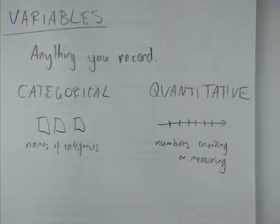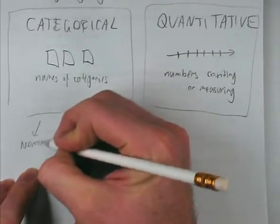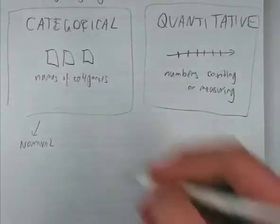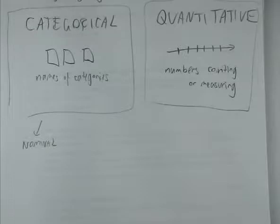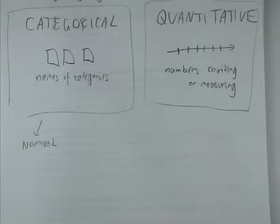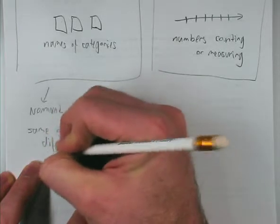Within categorical, there's nominal — which means names with no order. The best way to decide what sort of variable you have is to ask yourself: what ways are there to compare two answers? Nominal variables can only be compared by saying they are the same or different. You can't say someone has a higher eye colour than another — you can't say blue is higher than brown. If you can't say whether one is higher or lower than the other, it must be nominal.